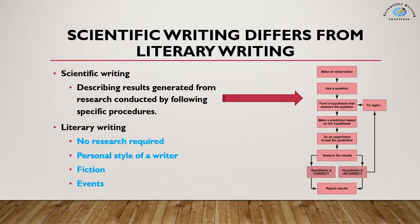We have to keep in mind that scientific writing differs from literary writing. In scientific writing, scientists describe the results generated from research conducted by following specific procedures. Scientists make observations, ask a question, then formulate a hypothesis — it's a long process we will cover in coming videos. Literary writing is quite simple; there is no requirement of research, it varies from person to person, and has several types like fiction writing, events writing, and news writing.